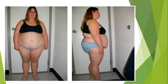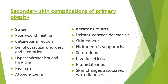The skin manifestations of a child who is obese since early childhood include: striae developing mainly on the abdomen, poor wound healing, increased chances of cutaneous infections, lymphovascular disorders and ulceration, hyperandrogenism and hirsutism. Skin conditions like psoriasis are definitely associated with obesity. Atopic eczema is more prevalent, as are keratosis pilaris, irritant contact dermatitis, and skin cancers. Hidradenitis suppurativa is more common, scleredema is common, livedo reticularis and pilonidal sinus may develop. Many other skin findings are associated with diabetes, as most obese individuals develop insulin resistance and type 2 diabetes.